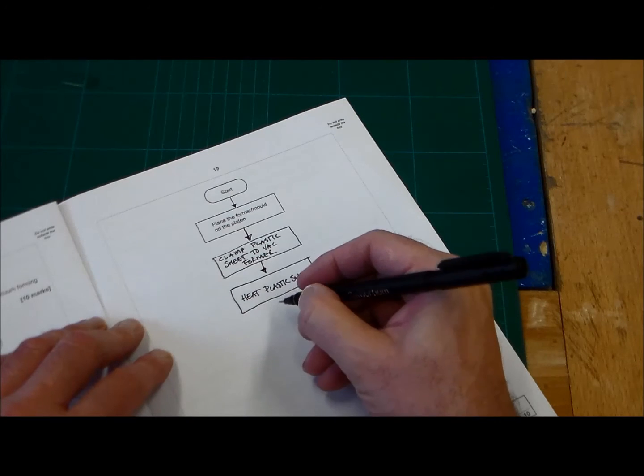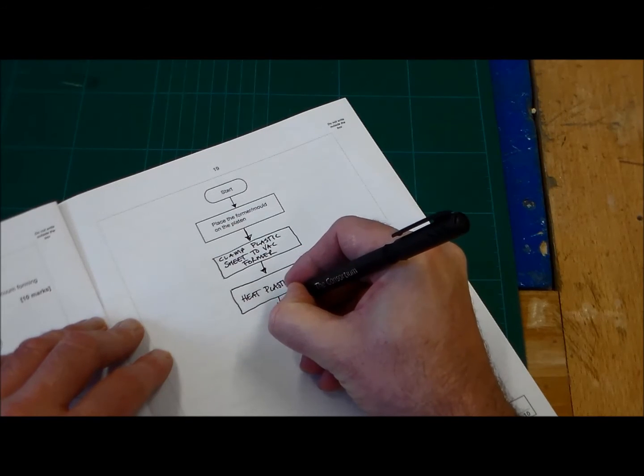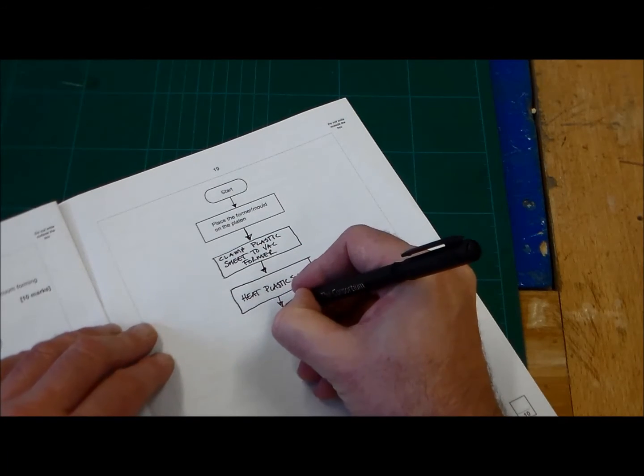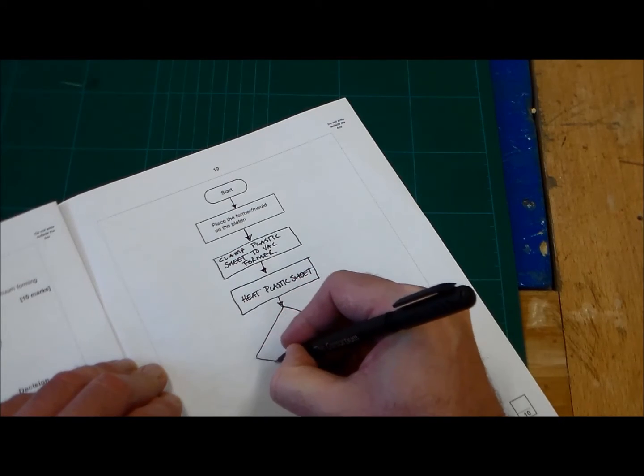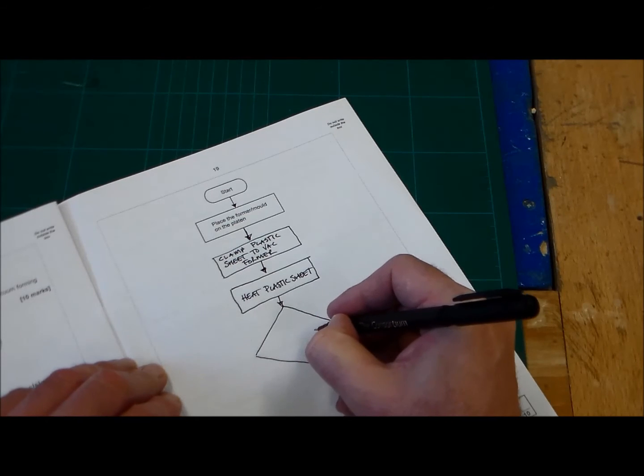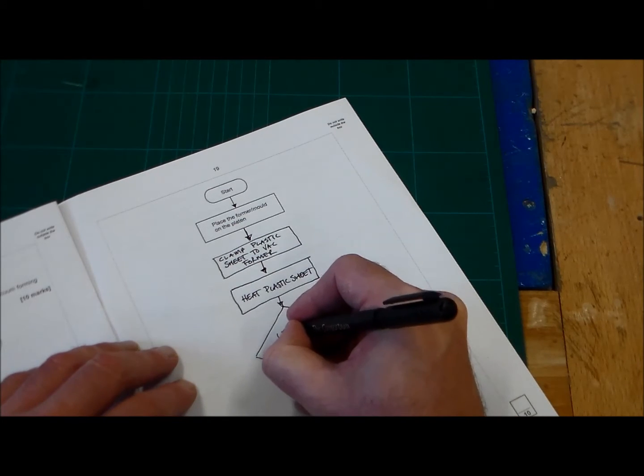Then, now we're coming up and we've got our flow arrow down here. And now we've got a decision. And the decision here is we use the diamond shape for the decision. And the decision here is: is the plastic hot enough?